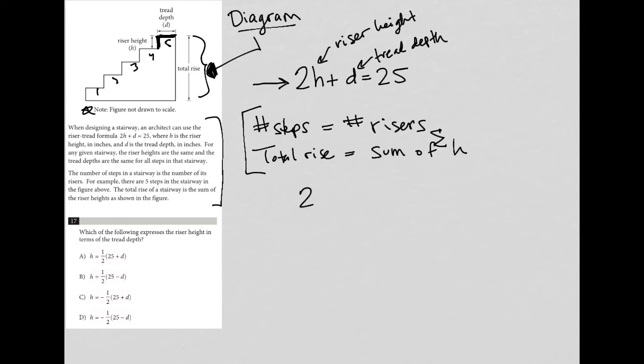So I'm going to rewrite the formula: 2H plus D equals 25. The question is asking for us to isolate H. It wants us to express the riser height in terms of, so anytime we see that, whatever is on the left of the "in terms of" is what we want to isolate. Think of it as like equals, and then whatever's to the right of the "in terms of" is the variable that should be on the right hand side.